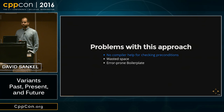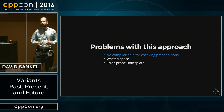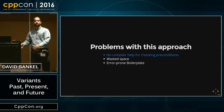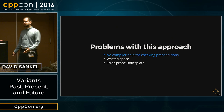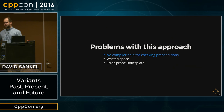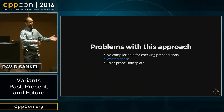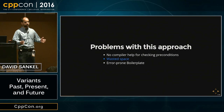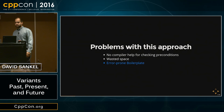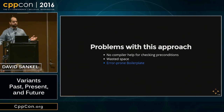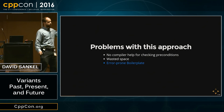The problems with this approach: we don't get any compiler help for checking preconditions, so there are no guarantees that users will actually meet them at compile time. There's wasted space, because you have the string and the int where you really only need one at a time. And there's a bunch of boilerplate, which is error-prone. These are the drawbacks.